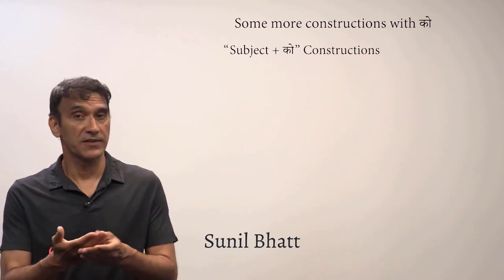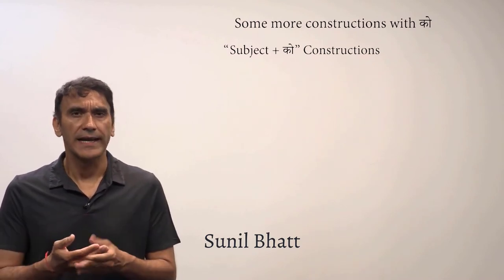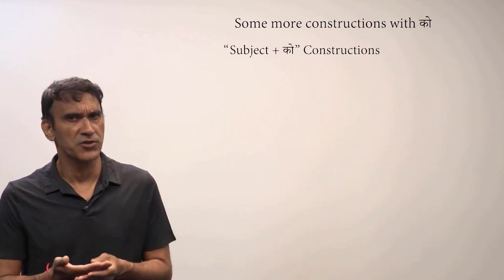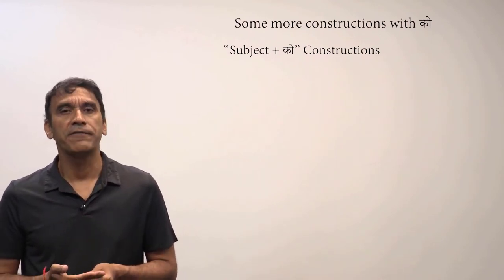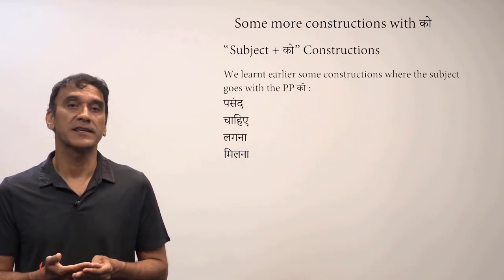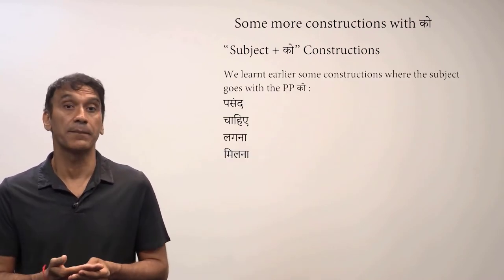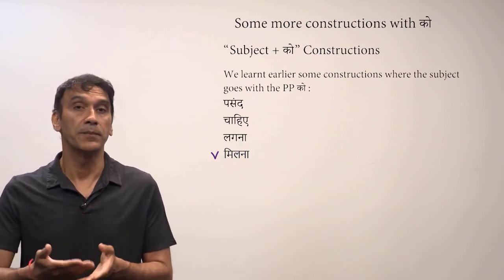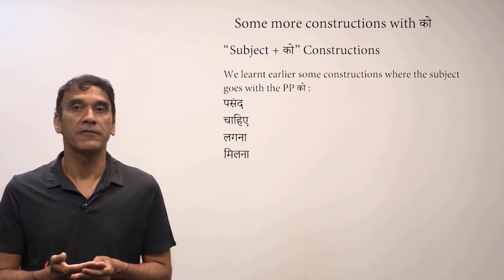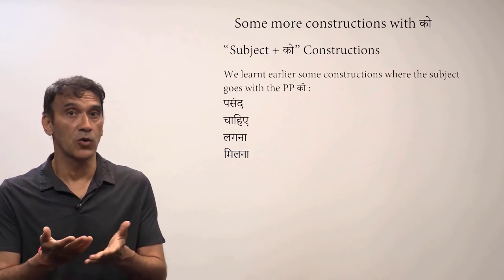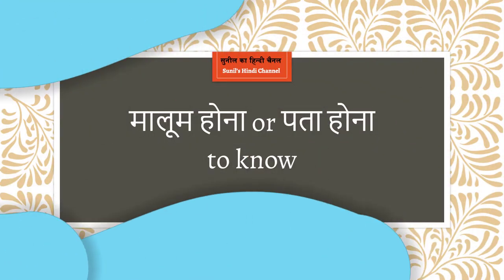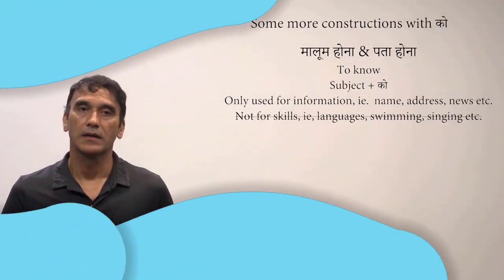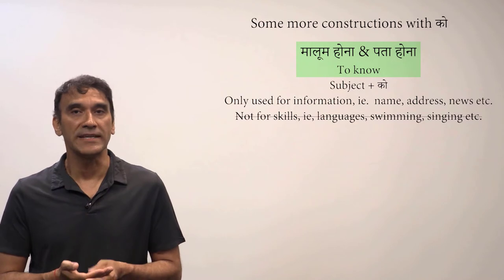The next grammar point is more constructions with the postposition 'ko.' In this grammar point, we will take constructions where the subject of a sentence takes the postposition 'ko.' In a few earlier grammar points we learned some constructions with the subject taking 'ko' — for example, with 'chahiye,' the verb 'lagna,' and the verb 'milna.' Let's now learn a few more such constructions where the subject takes the postposition 'ko.'